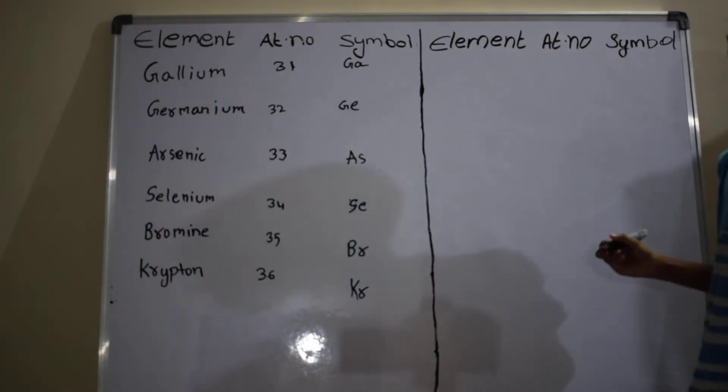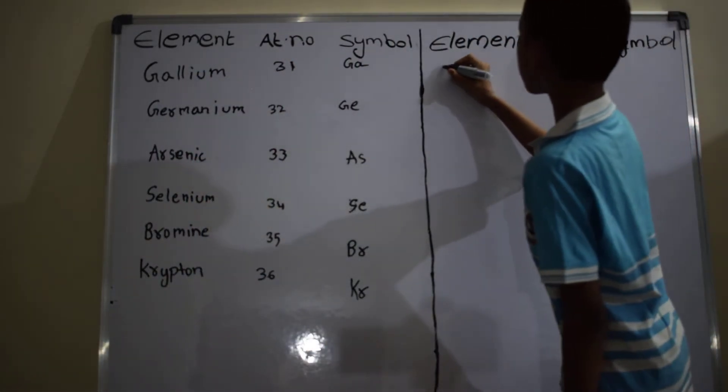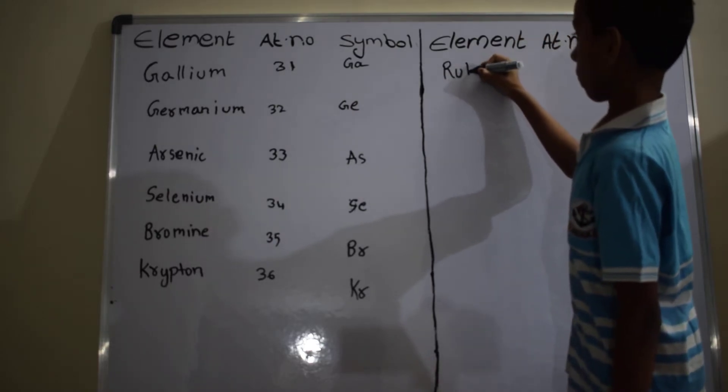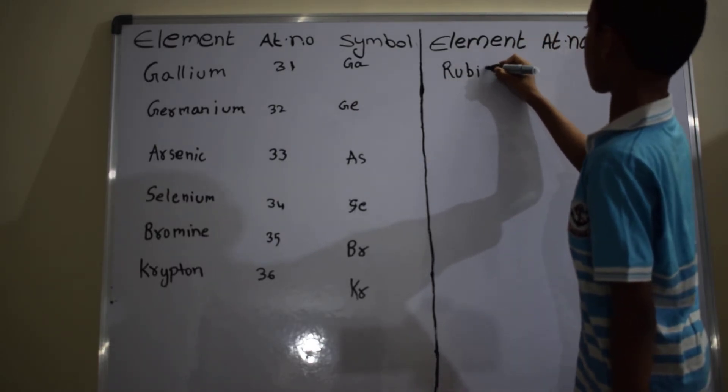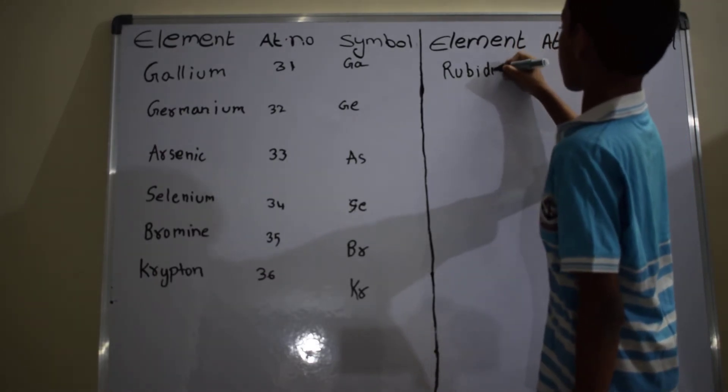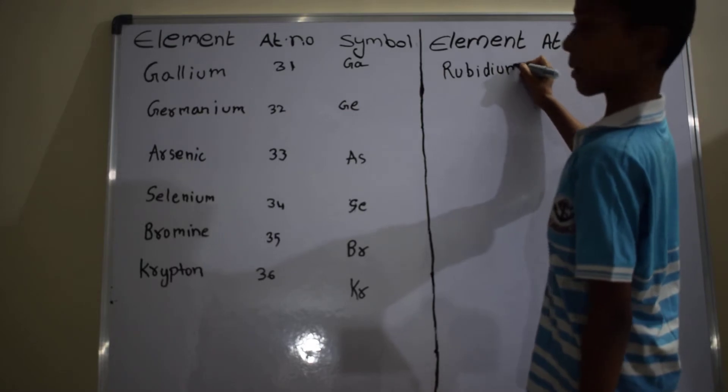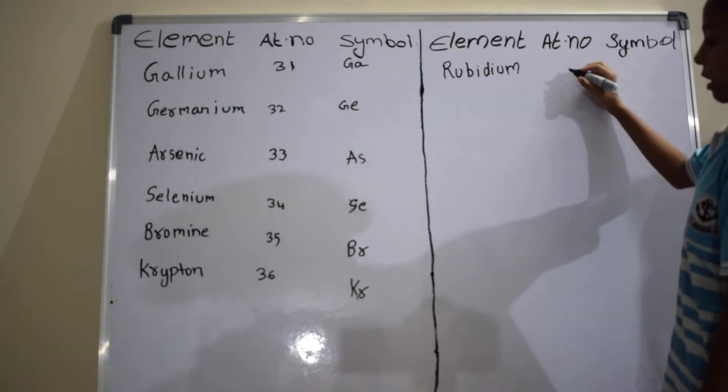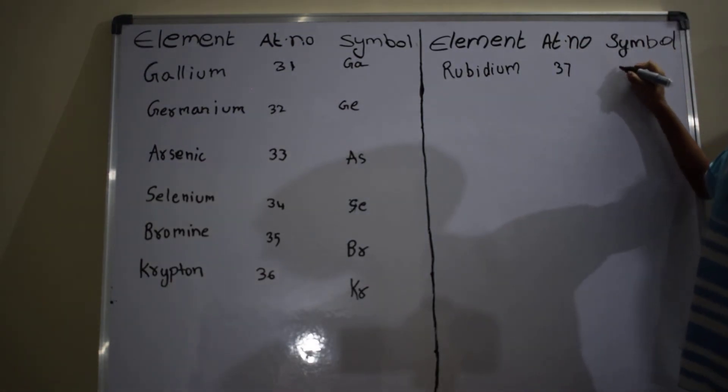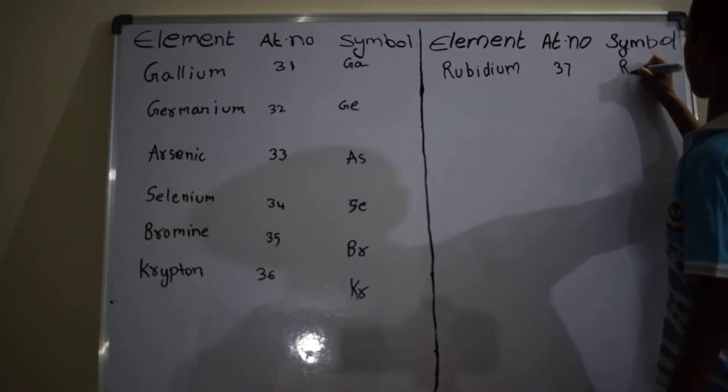Next element is rubidium, R-U-B-I-D-I-U-M. Atomic number is 37. Symbol is Rb.